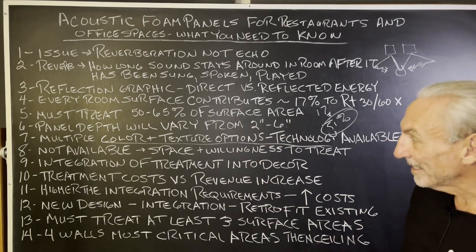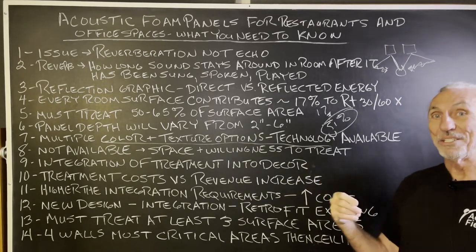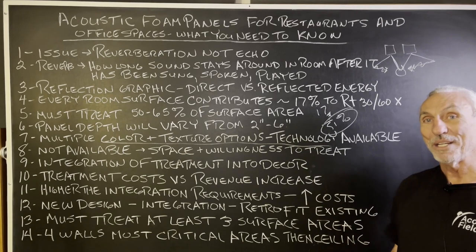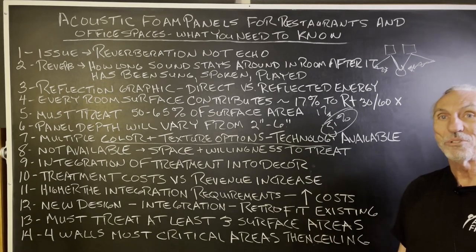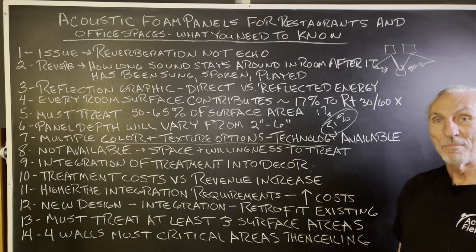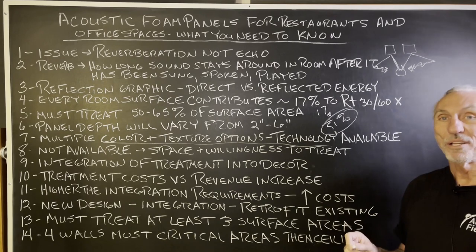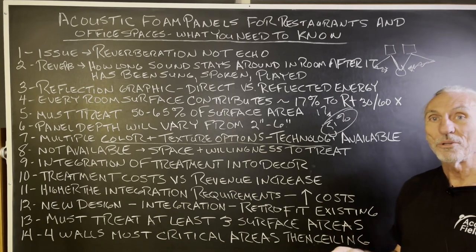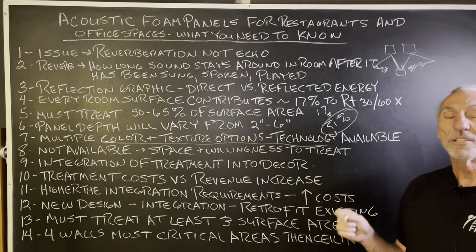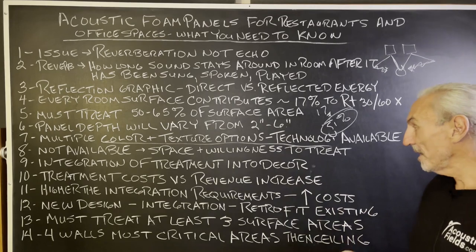I get it — people don't like treatment. It doesn't look good or integrate well. You have to integrate it into the design, like we did with the sushi bar. The foam is gray, and that's the cheapest way to install it. If you cover it with fabric, your costs are going to go up 20, 30, or 40 percent. Since you have to cover a lot of surface area, cost is definitely a consideration.